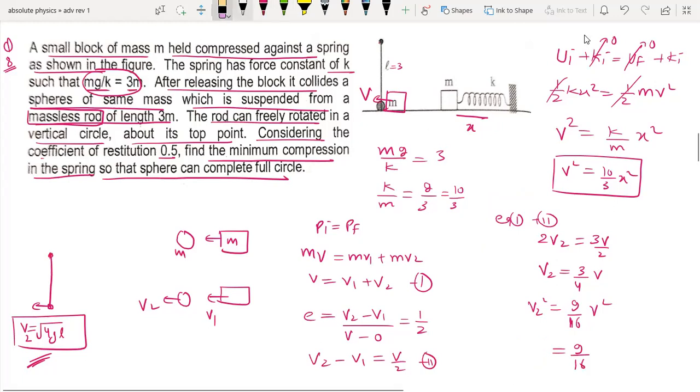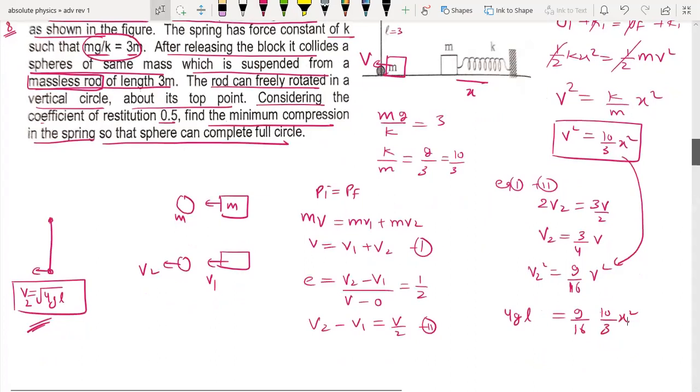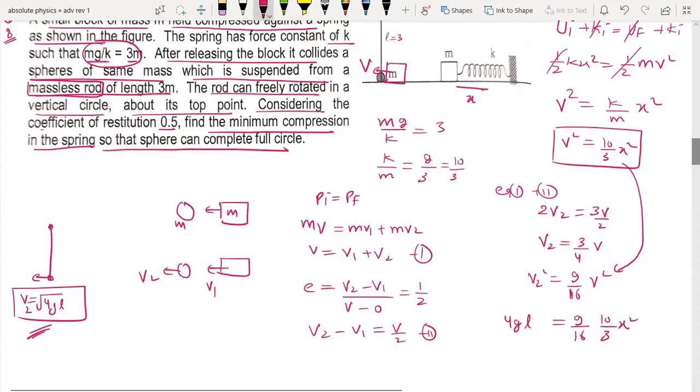V2 value is equal to 10 by 3 x square. So x squared equal to 64, x equal to 8. So the compression is 8 meters.